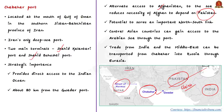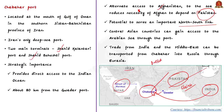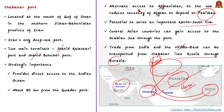Chabahar Port reduces Afghanistan's necessity to depend on Pakistan. Now India can reach Afghanistan through Iran, and Afghanistan can import or export through Iran instead of Pakistan. Additionally, Chabahar Port has the potential to serve as an important north-south link — India can reach Russia easily through Chabahar and through Central Asian countries. Central Asian countries such as Uzbekistan and Kazakhstan will also gain access to the Arabian Sea through this port. Trade from India and the Middle East can be transported northward from Chabahar into Russia and Europe through Eurasian countries — providing an alternate route instead of going through the Red Sea and Mediterranean Sea. All these aspects make Chabahar a very strategically important port.